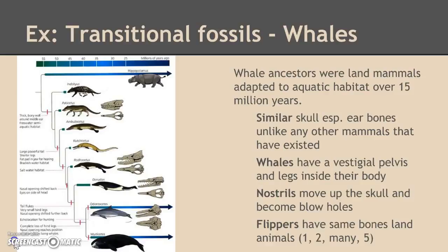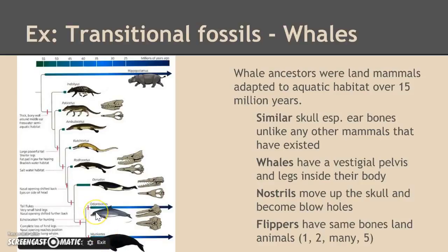Also, you can see that from Pachycetus back there, which has feet and a tail, you can see the nostril hole at the tip of the skull right here, and you can see that over time that nostril hole has moved up and farther up the skull, to where now it's a blowhole on the top of dolphin and whale heads. So that's another piece of evidence about that.